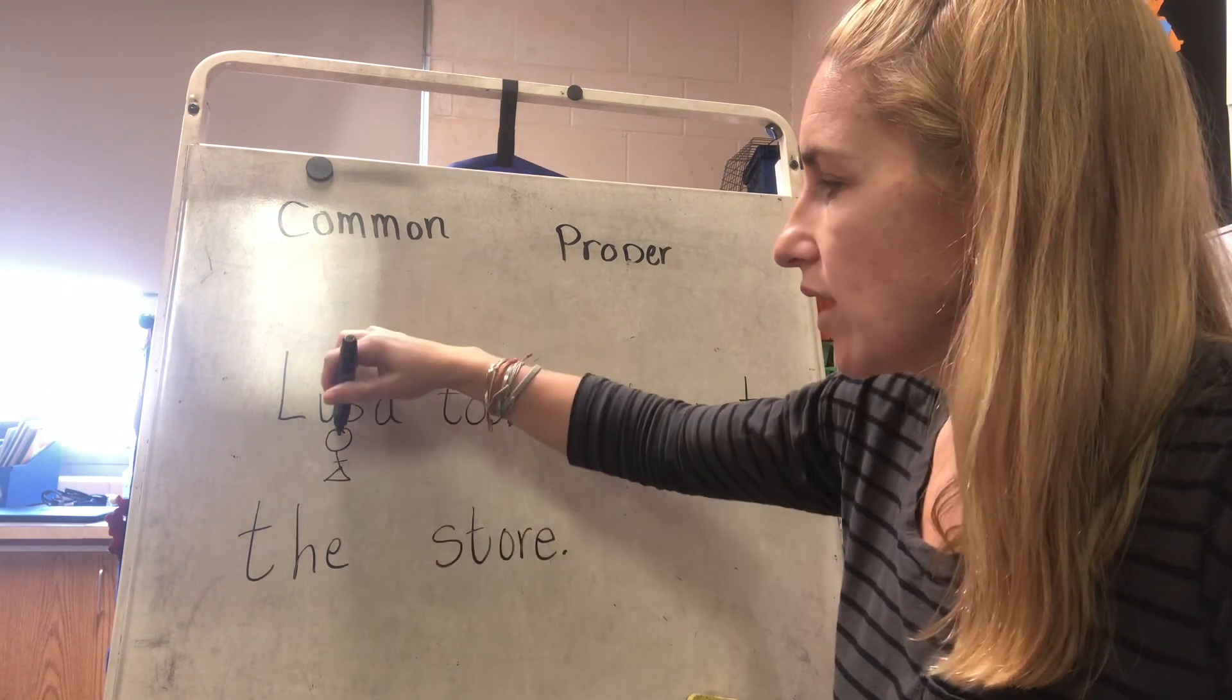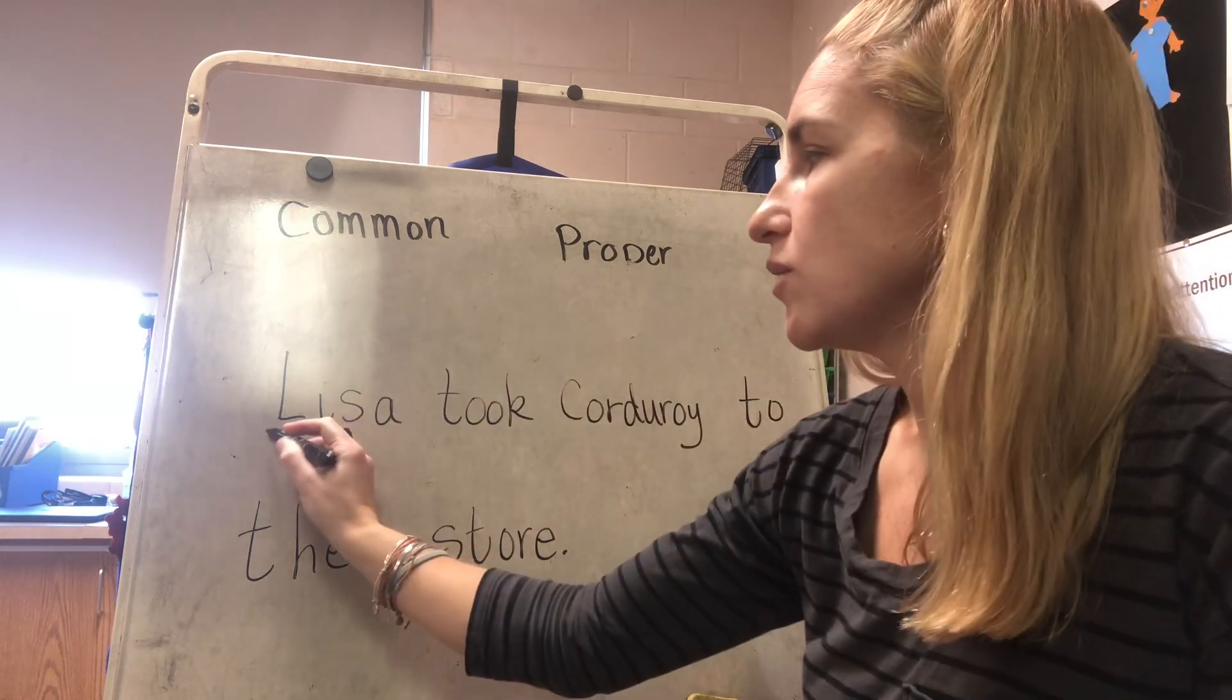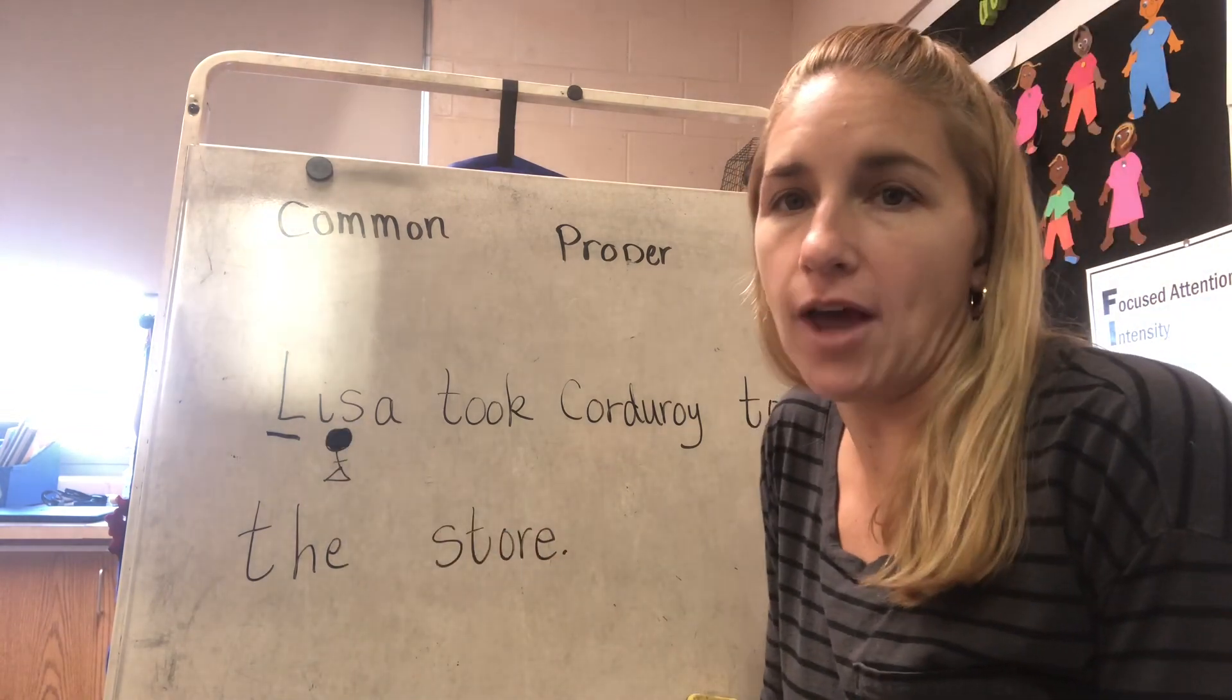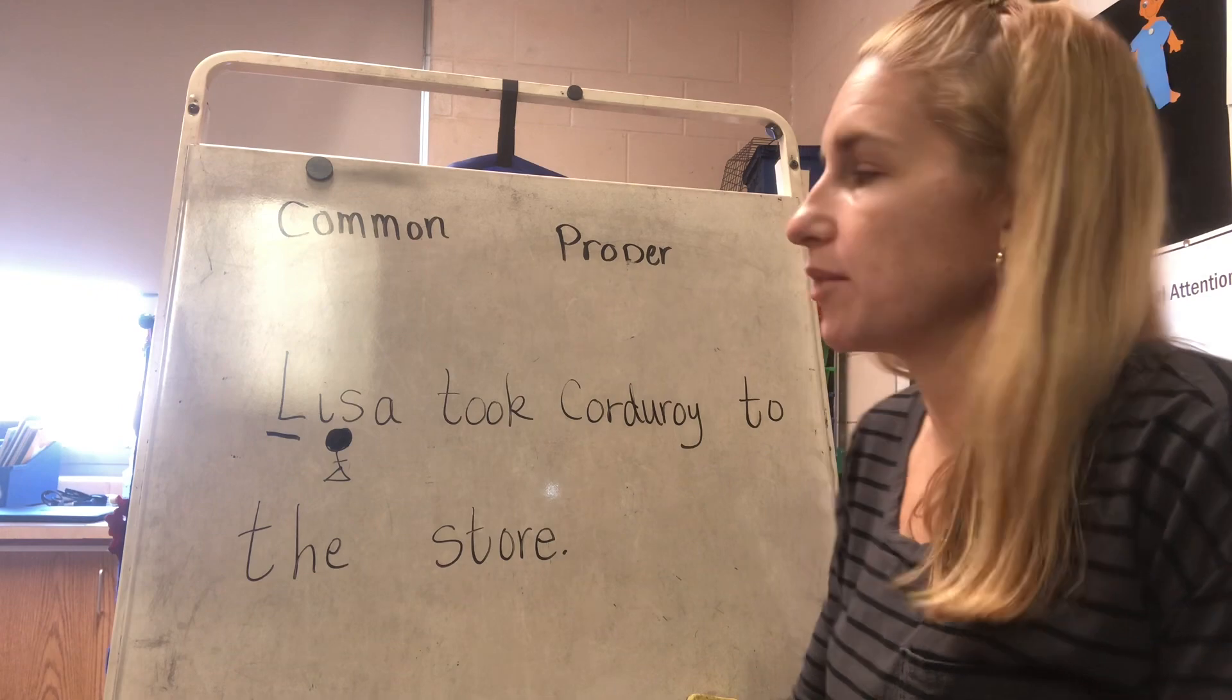Lisa was the girl, and we know it's her name. So we're going to give her the girl symbol, but we'll fill in the head so we know it's a proper noun. And we underline it because we know it has an uppercase. All proper nouns start with uppercase letters.